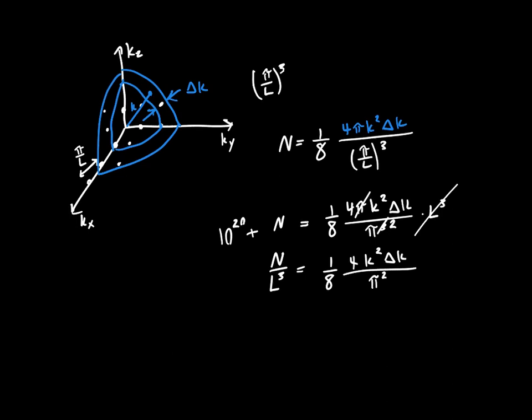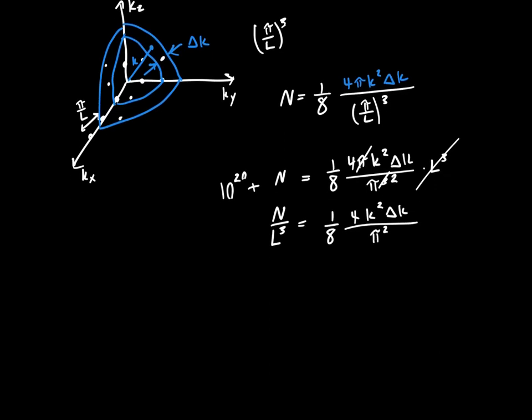And so this is the density of states in a certain volume in k-space, and this is why I chose the spherical shell. If I take the limit as delta k approaches zero, then I'll get dk, or the density of states, g as a function of k, is just one-eighth times 4 k-squared dk divided by pi-squared.